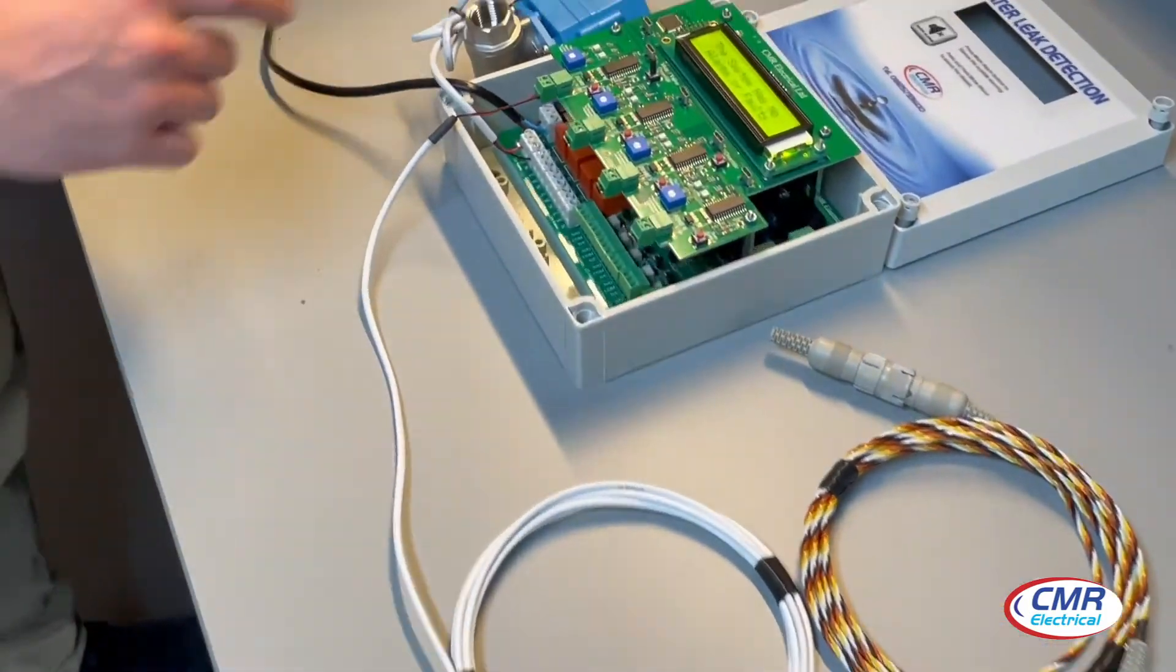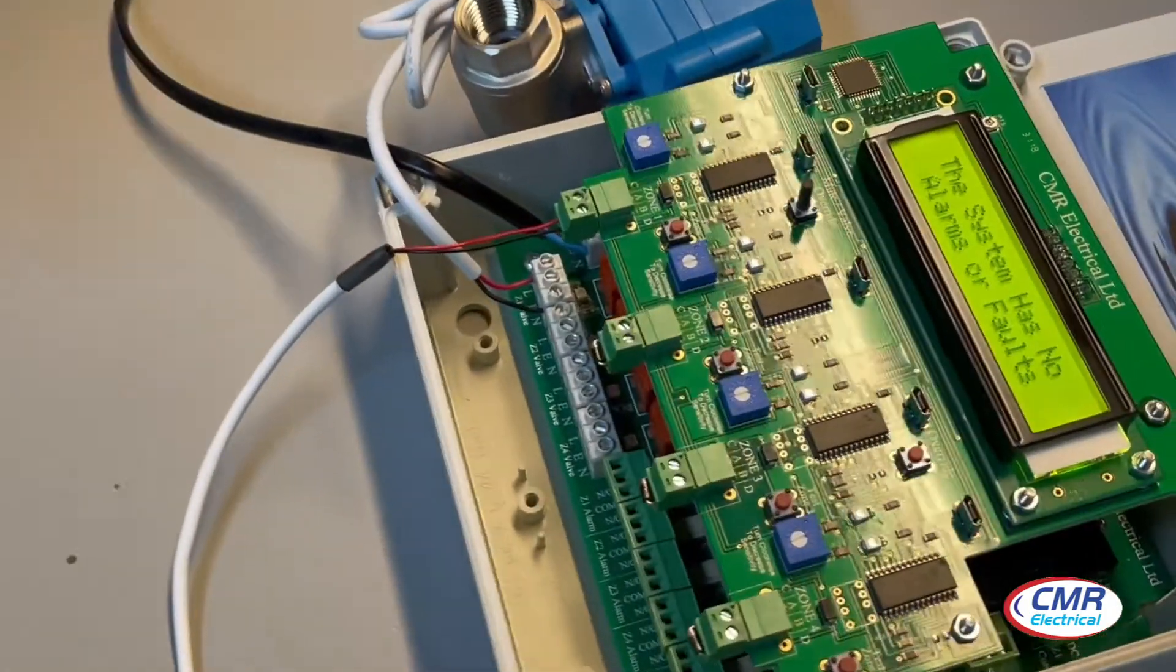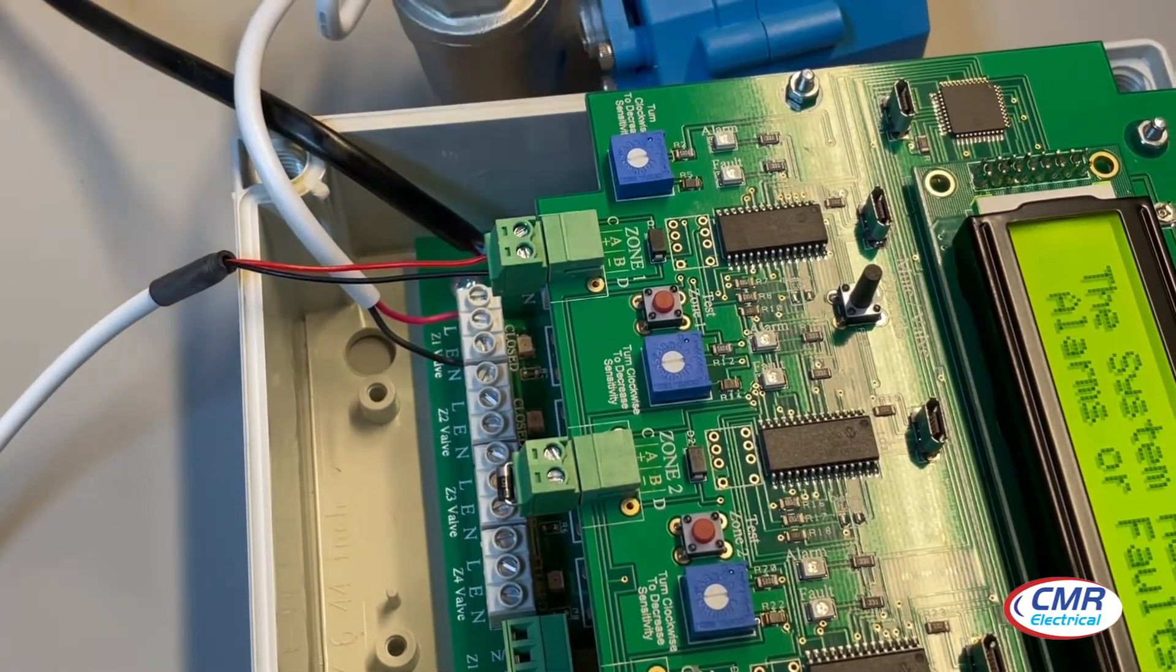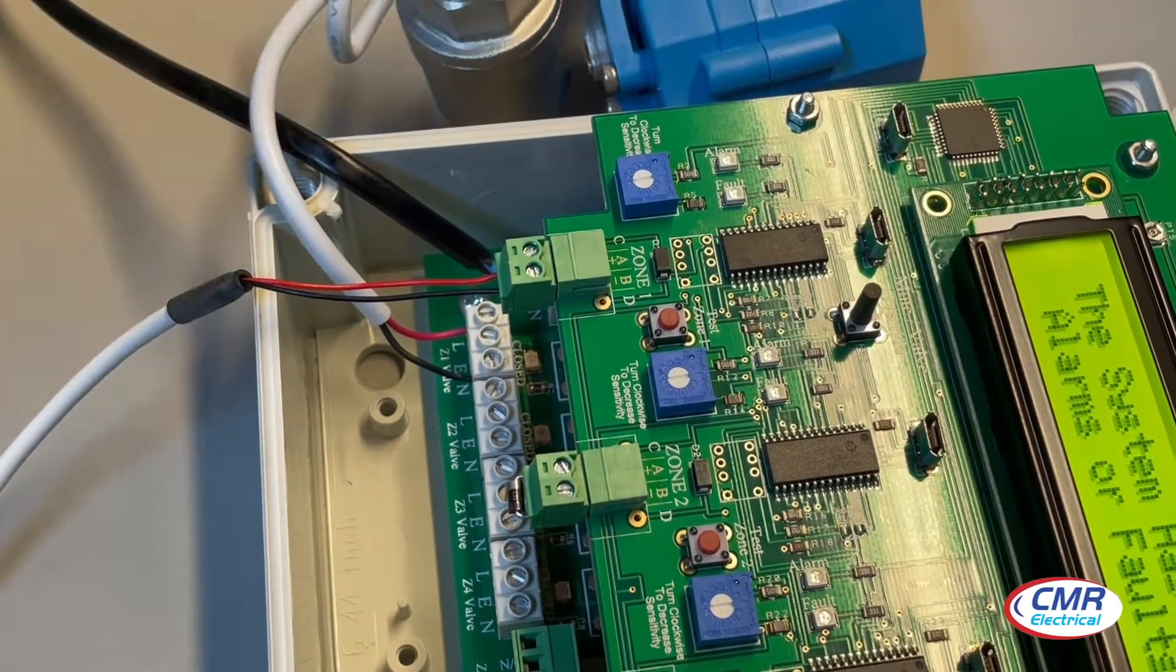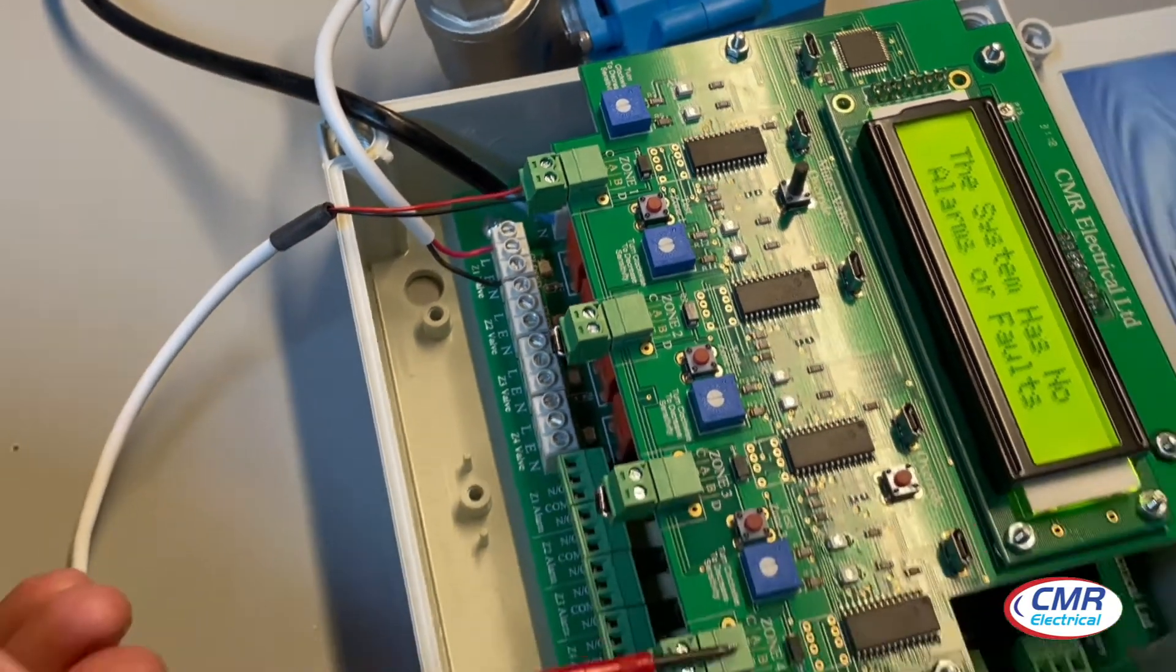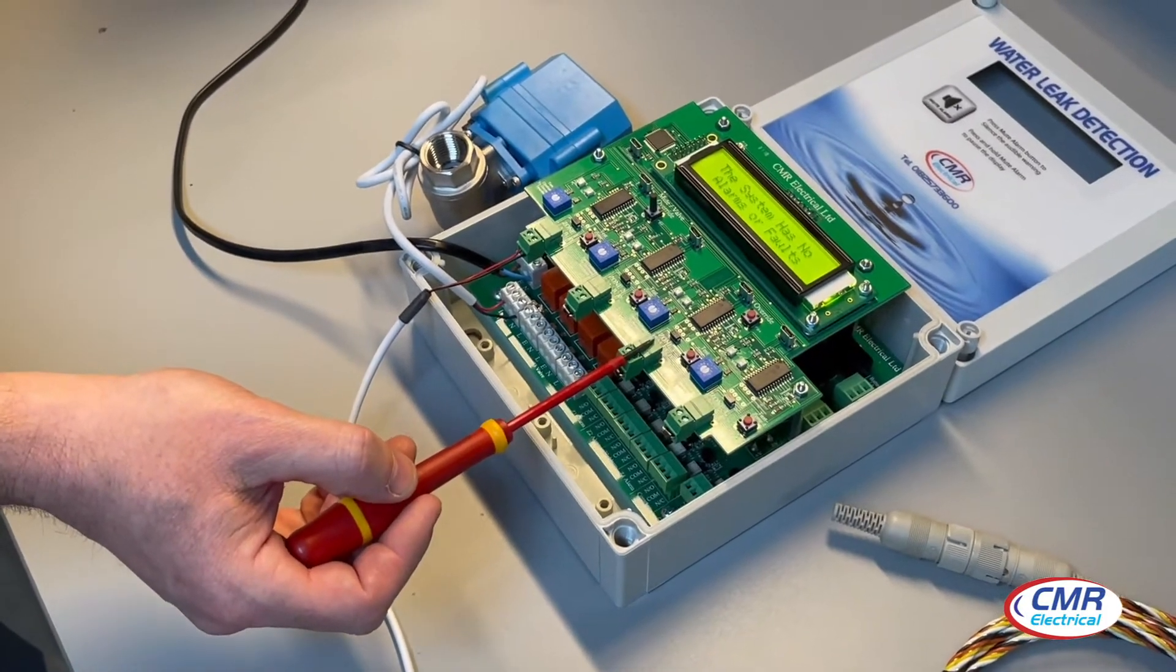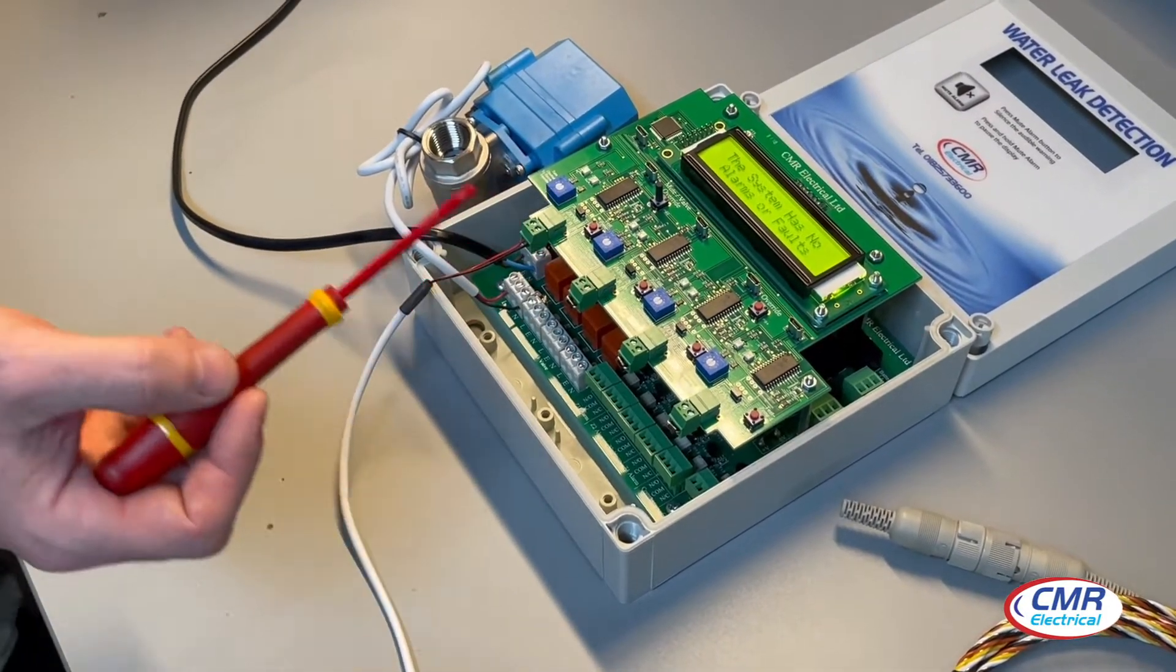The signal cable connects to a two-way thermal block over here. The red wire connects to A plus and the black wire connects to B minus. This is copied for every single zone, so if it's a three zone it'll be exactly the same for all three zones, and four will be exactly the same for a four zone.